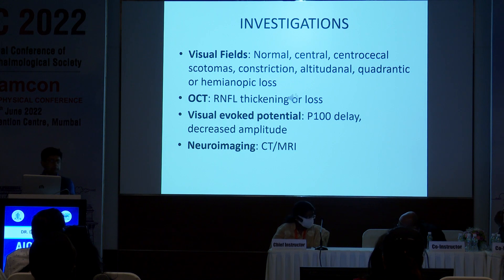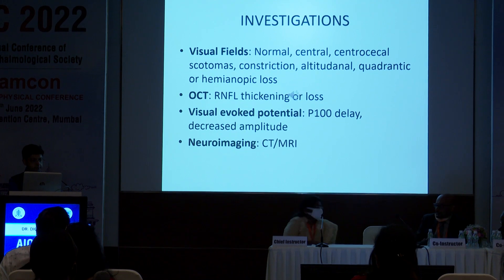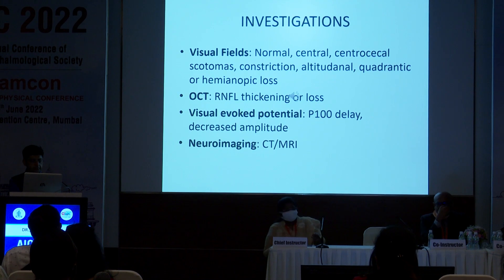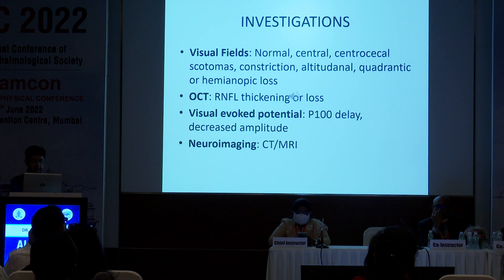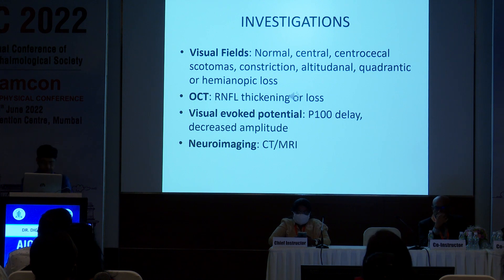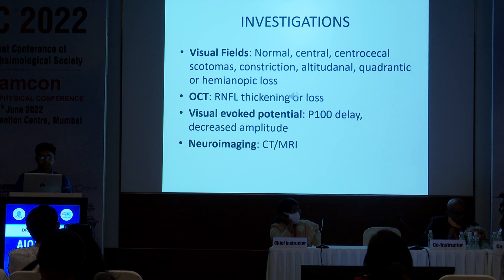The investigations include ocular investigations such as the visual fields, where you want to find what type of field effect it is — is it central, centrocecal, altitudinal, constriction, hemianopic? You can do the OCT to look for RNFL thickening or loss. A VEP can help you know whether there is a delay in the P100 latency or a decreased amplitude. Neuroimaging such as CT or MRI is often needed.